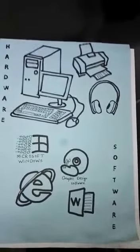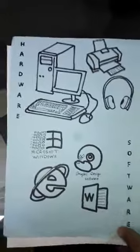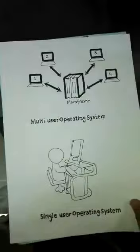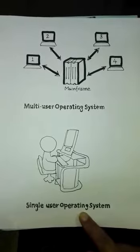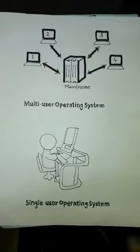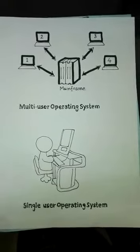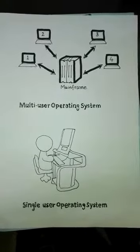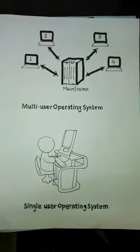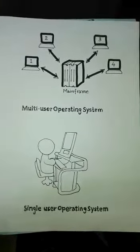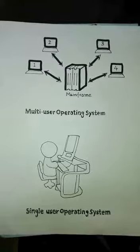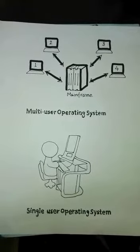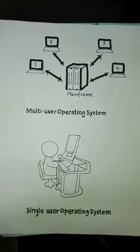Now there are two types of operating system. One is Single User Operating System and the other is Multi User Operating System. A Single User Operating System is clear by its name — only one user can work on it at a time. This is a computer system that only one user can use. The PCs and laptops we have in our homes are an example of Single User Operating System.